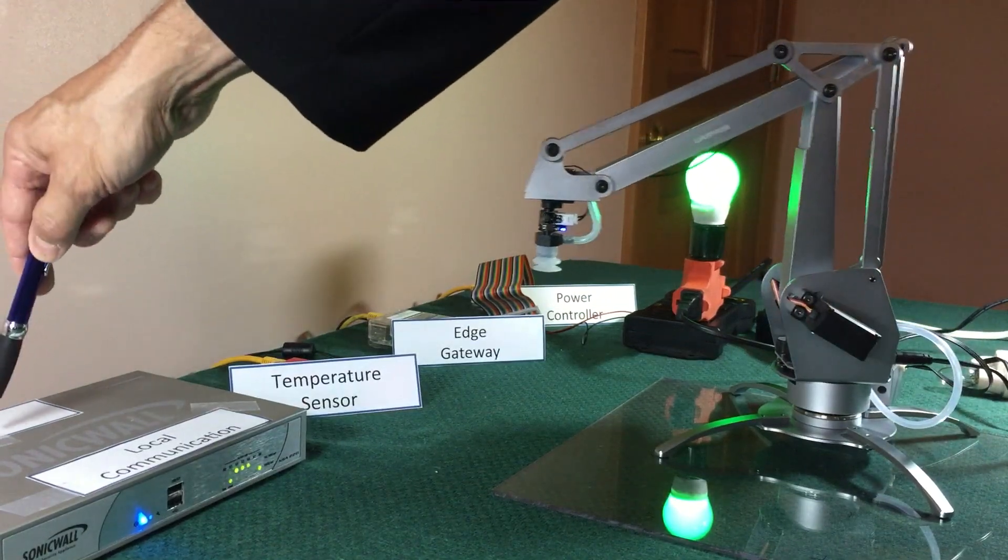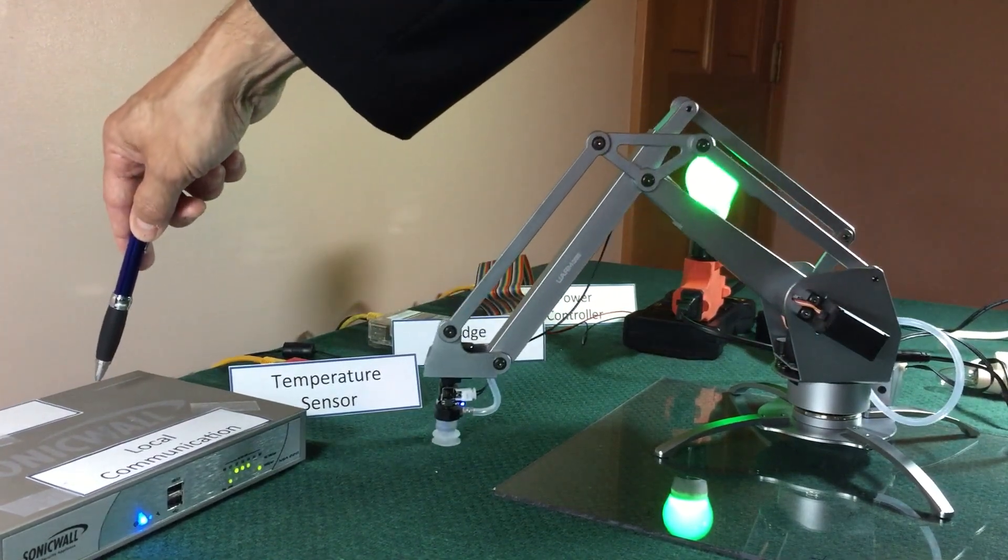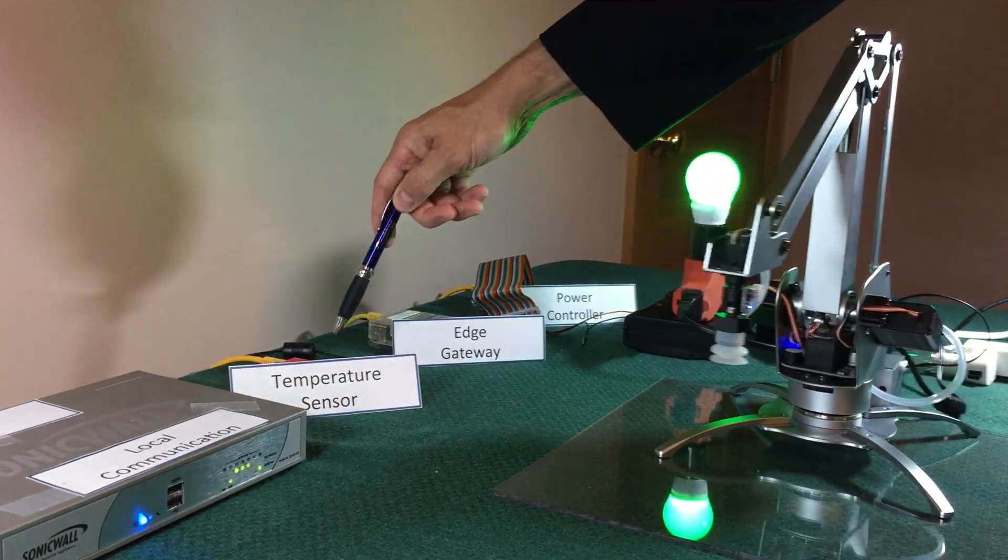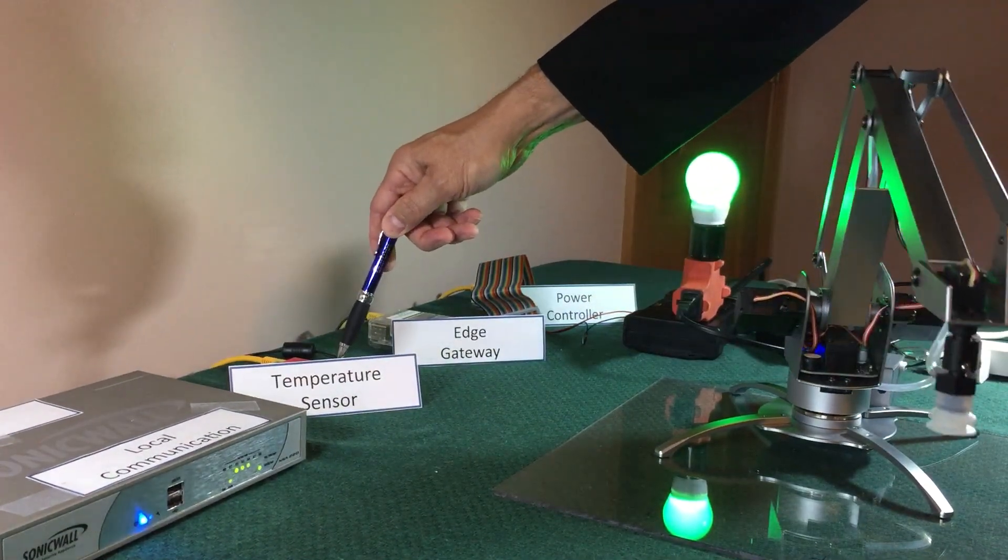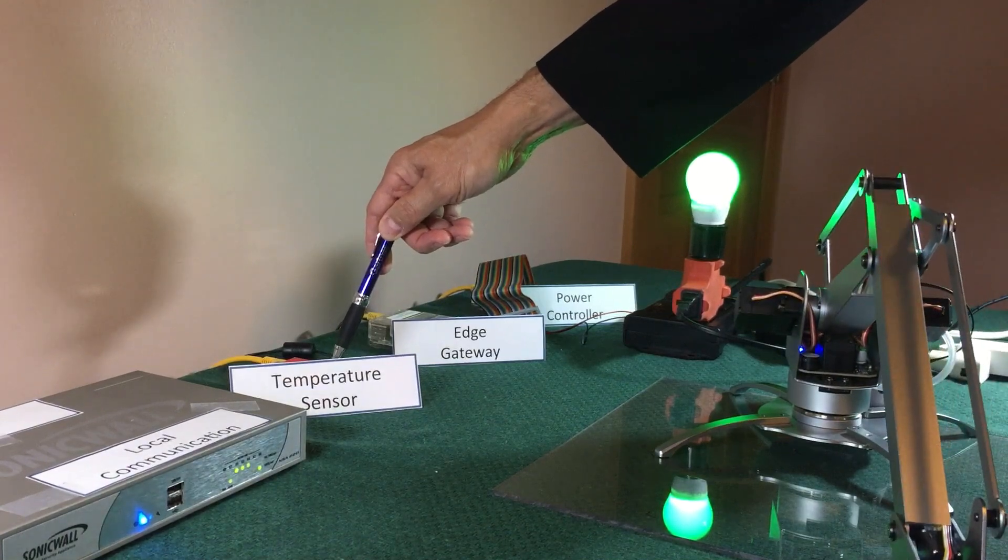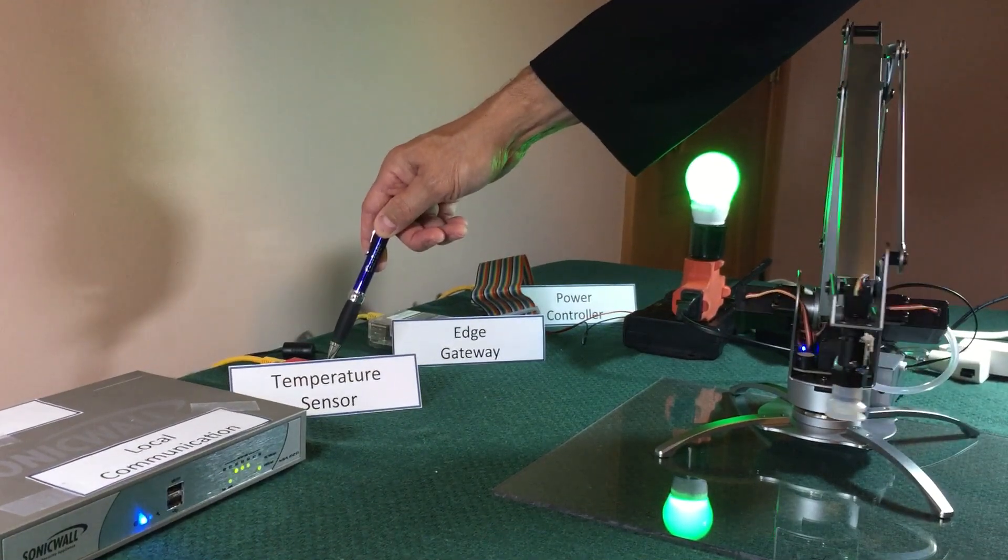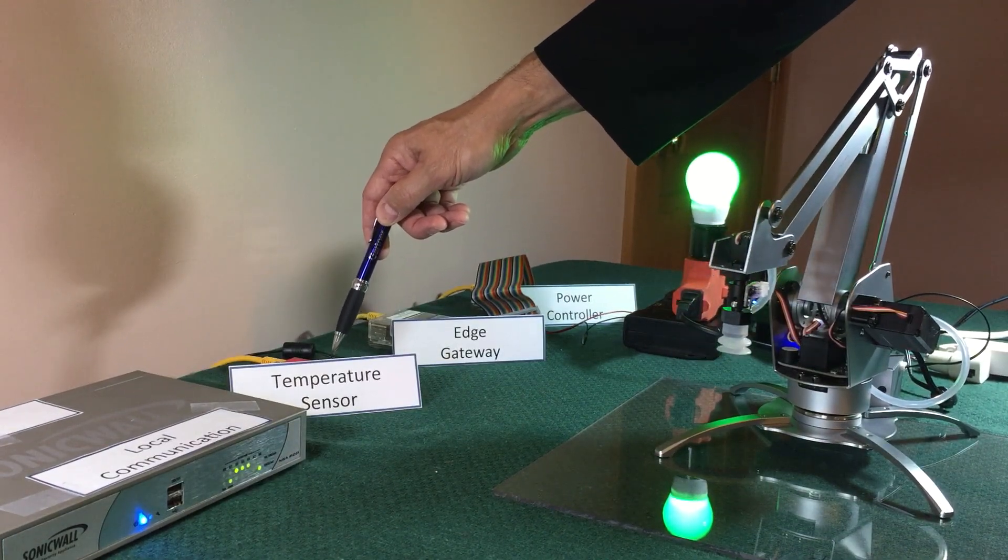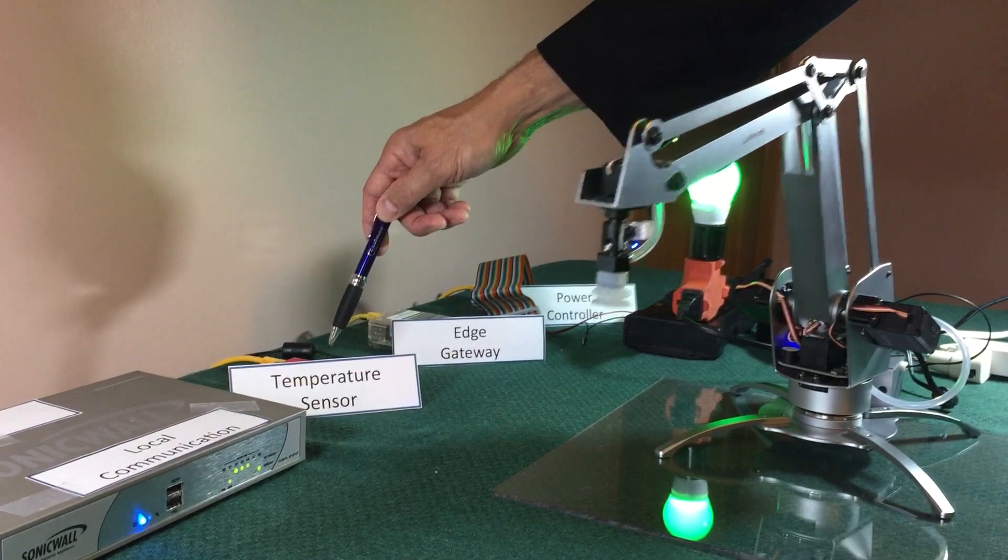We have over here the temperature sensor. This is a Raspberry Pi with a Sense Hat. It is running the Raspbian operating system and it's basically measuring temperature and pressure every second and sending that information to both the edge gateway and to the power controller.